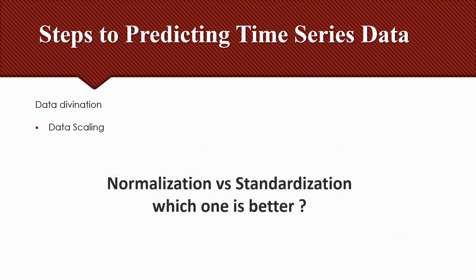Standardization typically means rescaling data to have a mean of 0 and standard deviation of 1, or unit variance. The question is: which one is better? Normalization is a good technique when you don't know the distribution of your data, or when you know the distribution is not Gaussian or Bell curve. Standardization assumes that your data has a Gaussian distribution. The best way to decide is to use trial and error — fit your model using both normalization and standardization and compare performance for the best result.